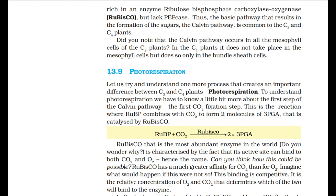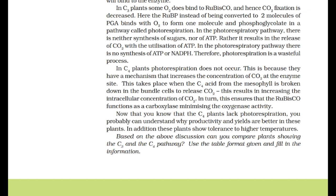Rubisco has a much greater affinity for CO2 than for O2, and this binding is competitive. It is the relative concentration of O2 and CO2 that determines which will bind to the enzyme. In C3 plants, some O2 does bind to Rubisco and hence CO2 fixation is decreased. Here the RuBP, instead of being converted to two molecules of PGA, binds with O2 to form one molecule of phosphoglycolate — a pathway called photorespiration.